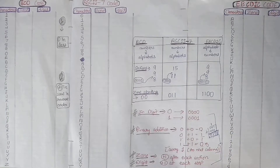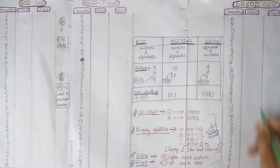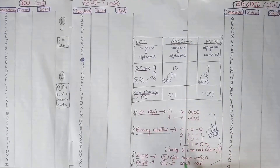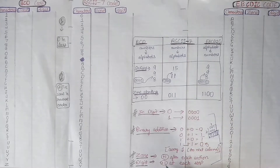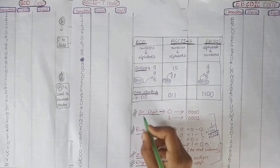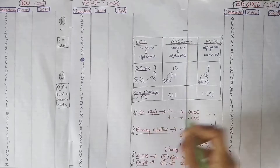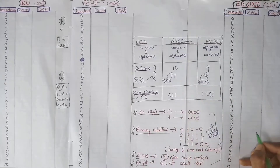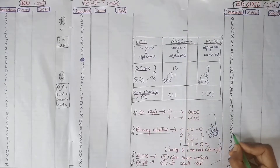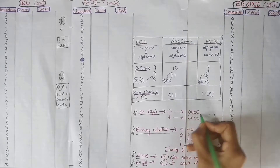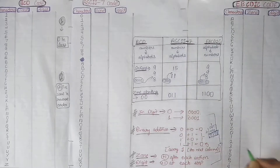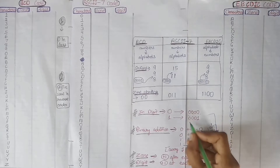The second rule is that in the zone area, we will add 1 after every section, and in the digit area, we will add 1 at each step. We also need to learn that in the digit area, if our numbers are starting from 0, we write 0000 in front of it. But if our numbers are starting from 1, we write 00001 in front of it.